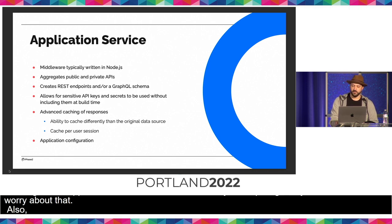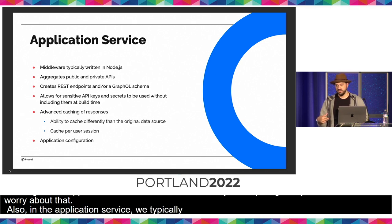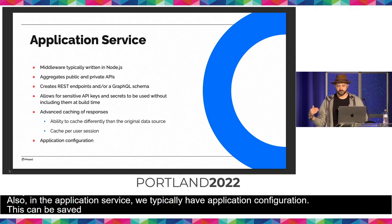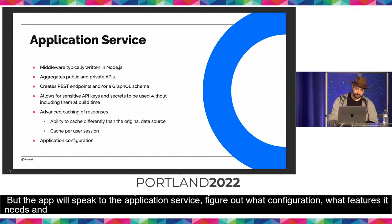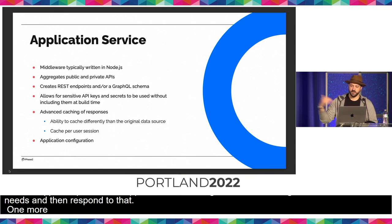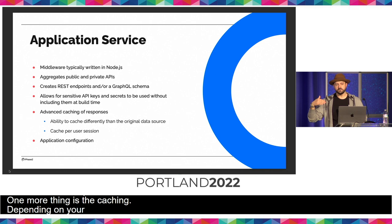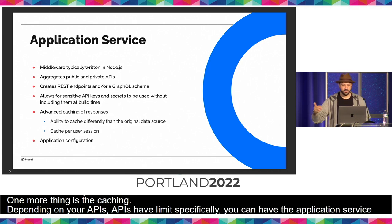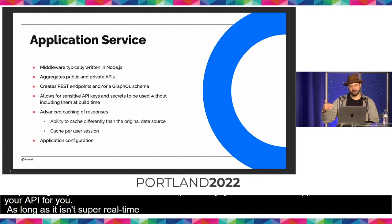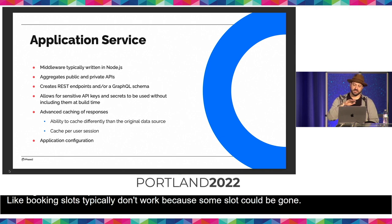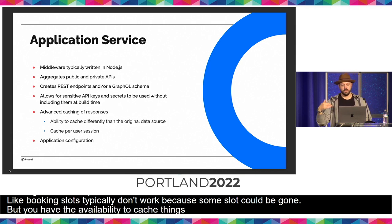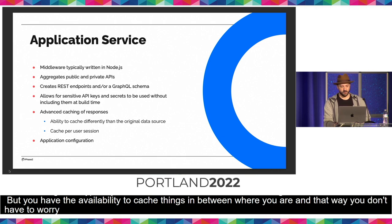The application service also handles app configuration, which can be saved in Drupal or a custom database. The app speaks to the application service, retrieves what configuration and features it needs, and displays that to the user. Regarding caching: APIs typically have rate limits. The application service can cache API responses as long as the data isn't super real-time — for example, search results or booking slots don't typically work well for caching. But for less time-sensitive data, caching prevents hitting API rate limits.